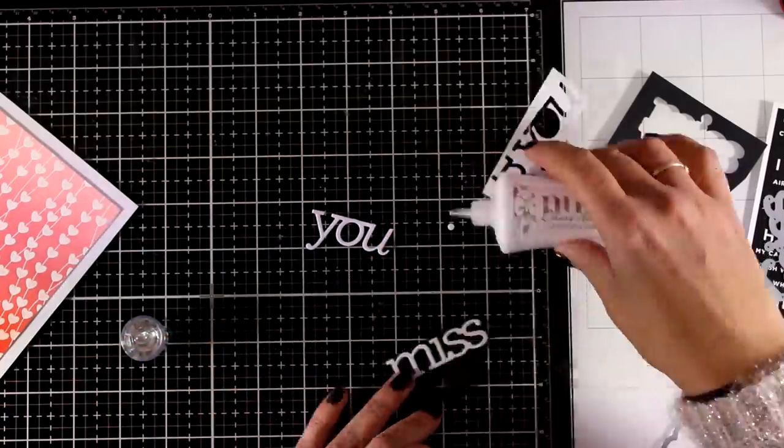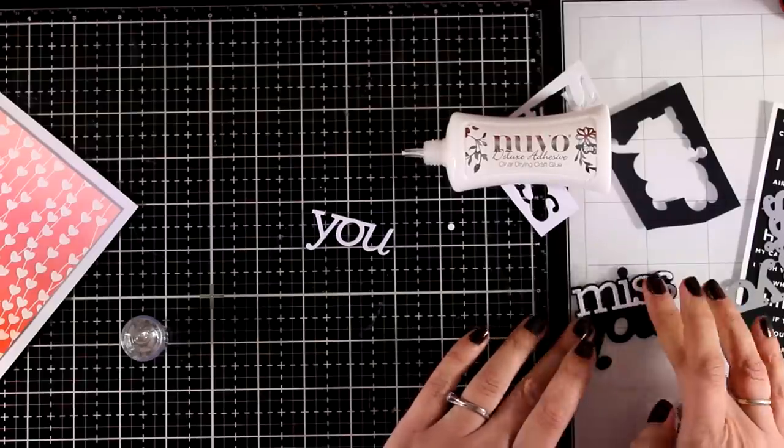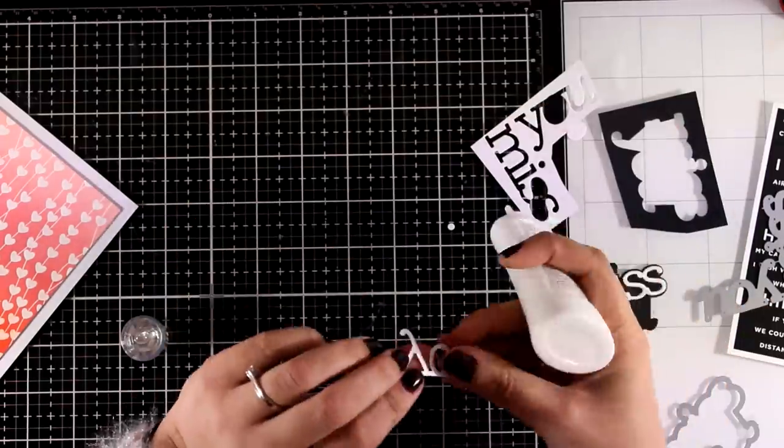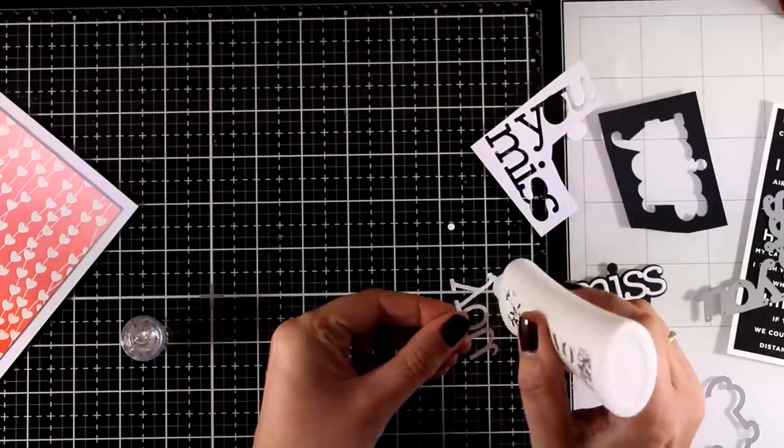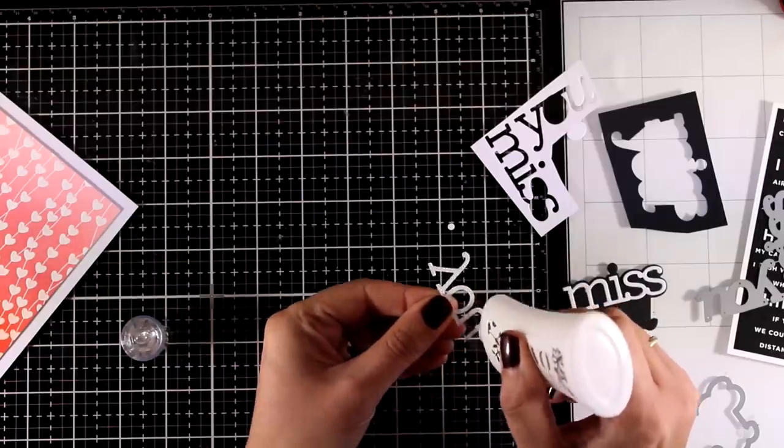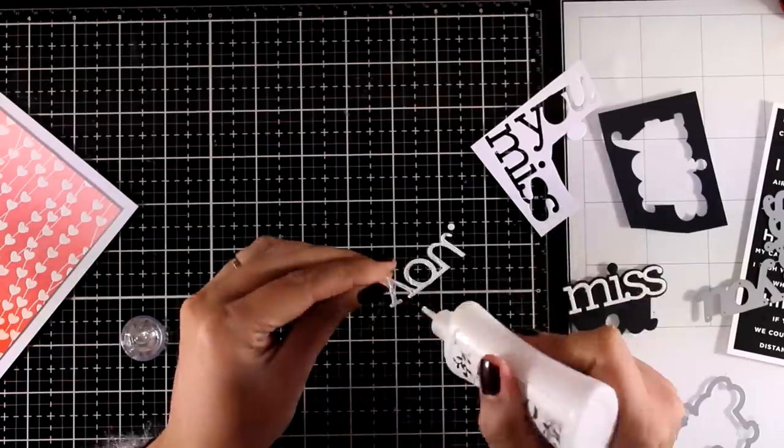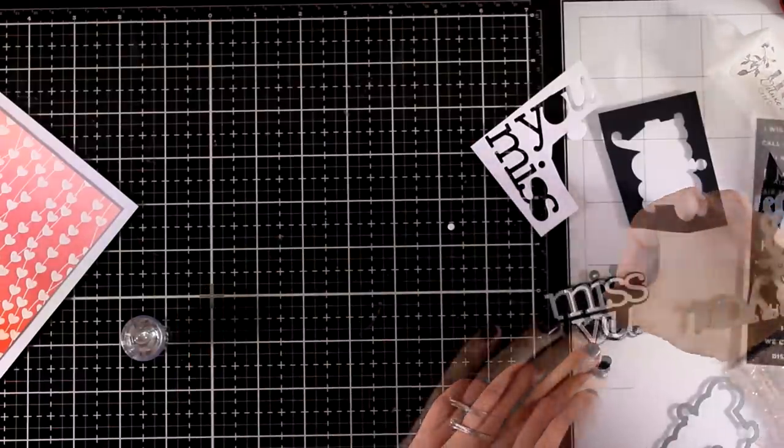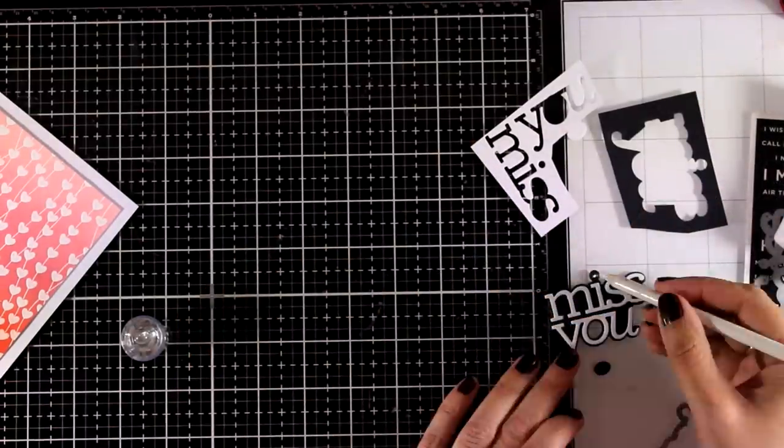Now just because I have a black background I can't really see but the fun part about the glass mat by Tim Holtz is that you get both white and black areas to work on. Now I'm going to glue down the U and of course I will not forget the little dot on the letter I.